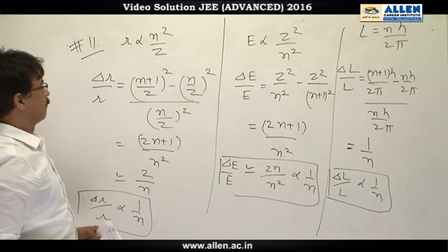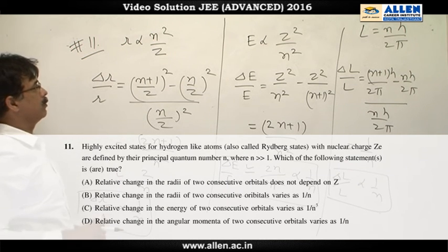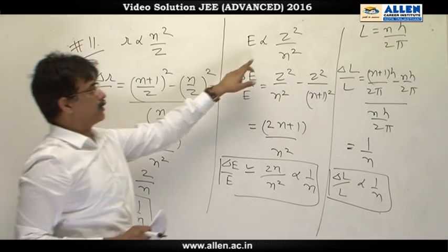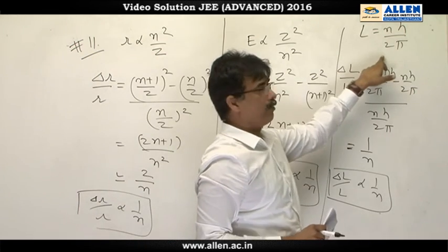Question 11. From Bohr's theory, we know that radius r is proportional to n square by z, and energy is proportional to z square upon n square, and angular momentum is given by n h upon 2 pi.